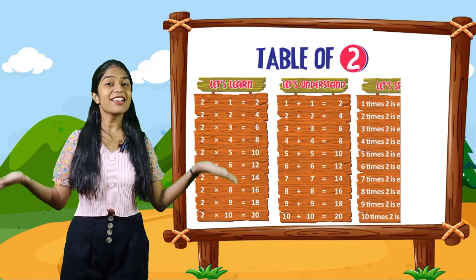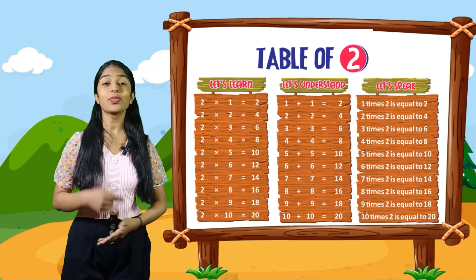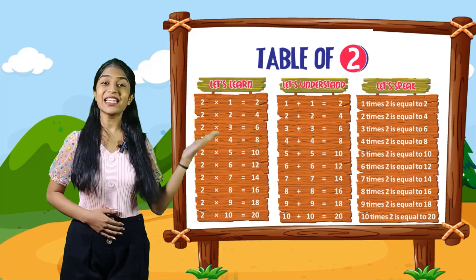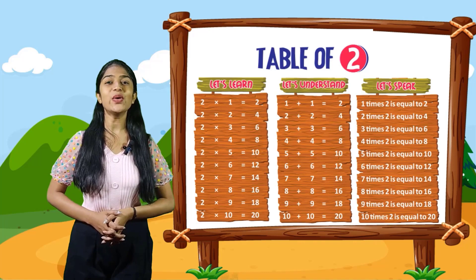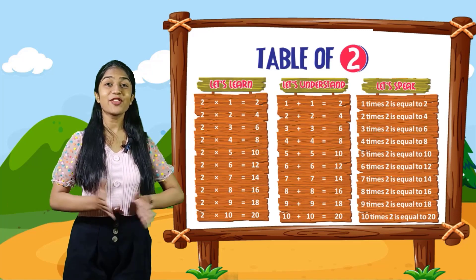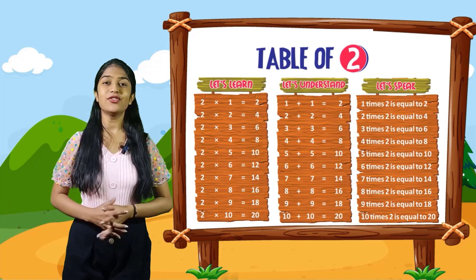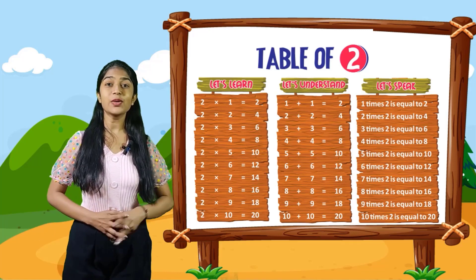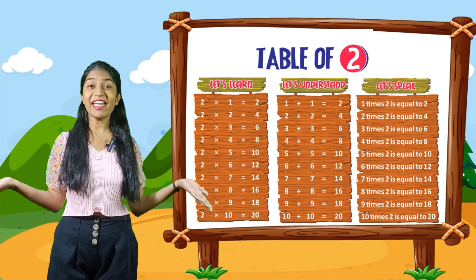So kids, now let's speak. You have to speak out with me. 1 times 2 is equal to 2. 2 times 2 is equal to 4. 3 times 2 is equal to 6. 4 times 2 is equal to 8. 5 times 2 is equal to 10. 6 times 2 is equal to 12. 7 times 2 is equal to 14. 8 times 2 is equal to 16. 9 times 2 is equal to 18. 10 times 2 is equal to 20. Rest you have to do yourself.